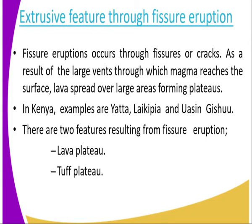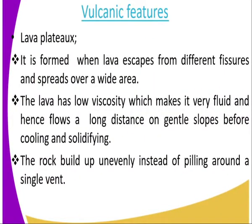There are two types of features resulting from the fissure eruption: the lava plateau and the tuff plateau. Let us have a look at them. The lava plateau is formed when lava escapes through different fissures and is sprayed over a wide area. You get a number of small cracks, so lava is sprayed over a wide area. The lava has low viscosity which makes it very fluid and it flows over long distances.